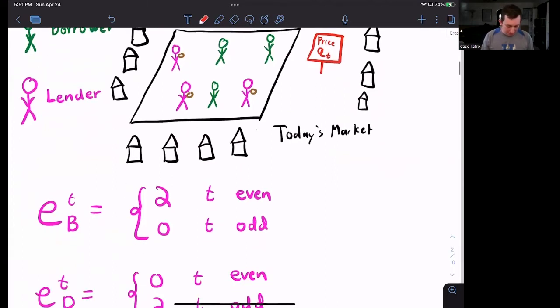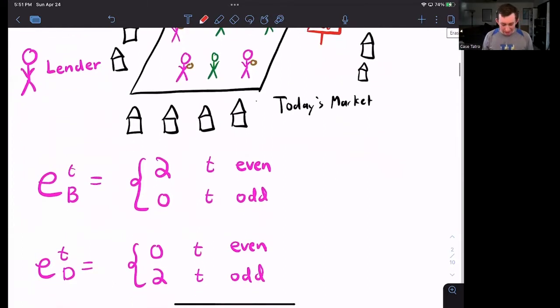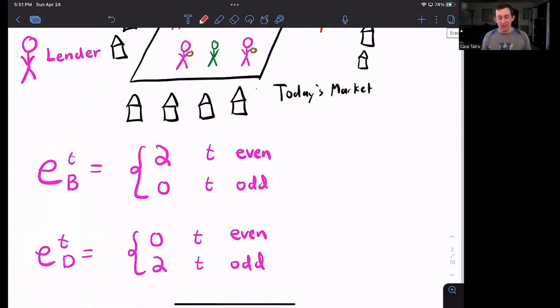We also said that Bill's endowment in every period is 2-0 alternating. And Dave's endowment is the opposite. So when Bill gets two coconuts, Dave gets nothing and vice versa.